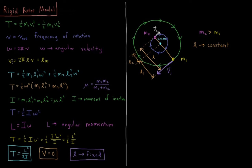The velocity v is equal to the length around the circle times the number of times we go around per second. The length of the circle is its circumference, which is two pi l, and the times we go around per second is nu, so that's two pi l nu. Therefore, the velocity is equal to l times omega.